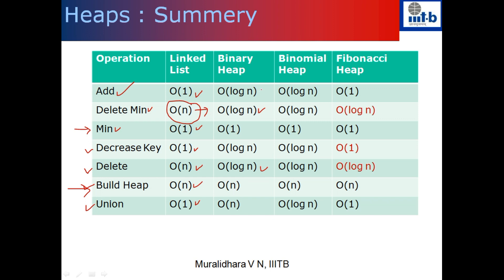Add became costly, decrease key became costly, and union suddenly became O(n) as well. What we notice is that finding the minimum remains the same, and build heap is O(n) in all heaps. But the problem with the binary heap was that union takes O(n), whereas with a linked list it was O(1). Then we studied binomial heaps. With binomial heaps, we were able to improve union from O(n) to O(log n), retaining the same complexity for every other operation as the binary heap.